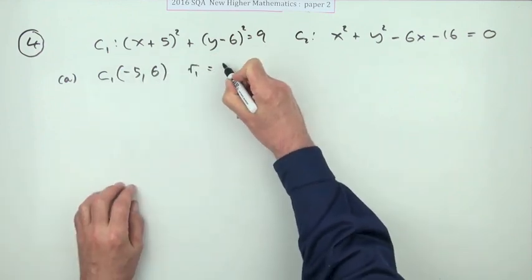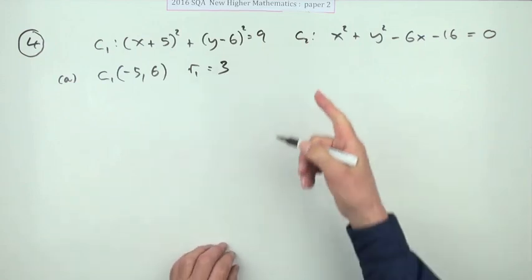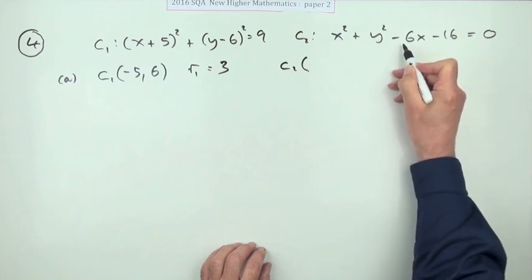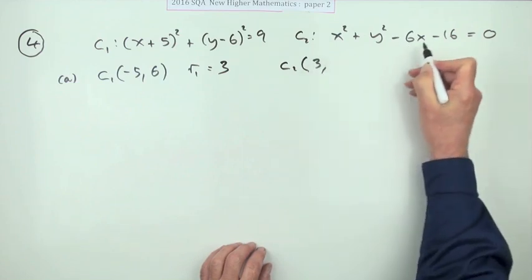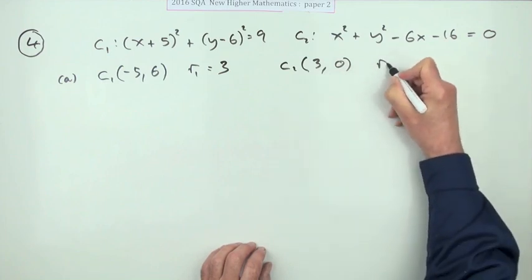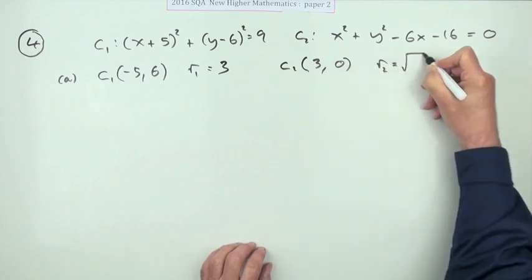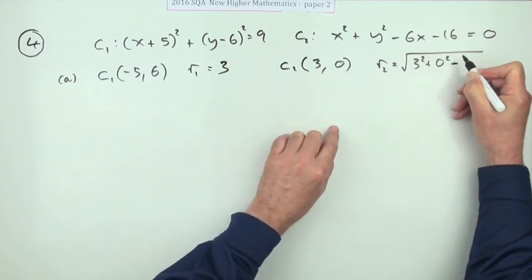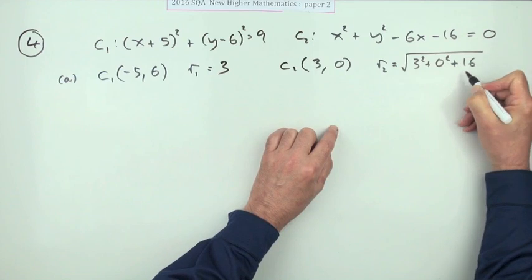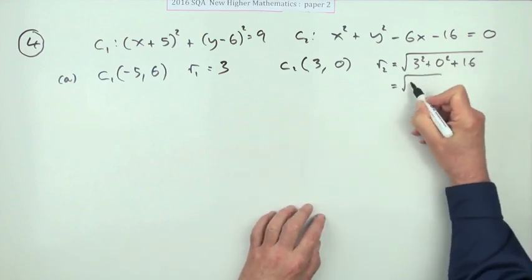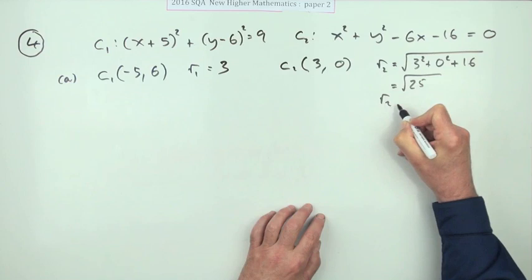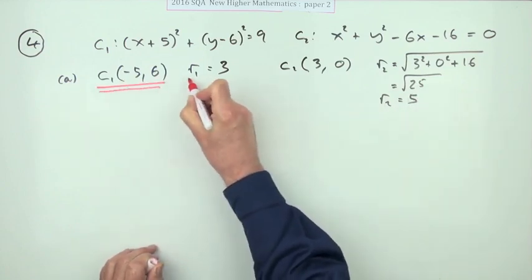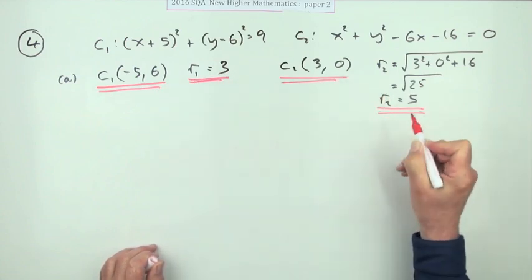And for circle two, if I borrow the name in the circle for its center, that will be half of the negative which is three. Notice there's no y so that will be a zero. Need to work out the radius. The radius is going to be the square root of the center squared: three squared plus zero squared minus the number at the end, so I'll be plus a 16. Well that's 16 and 9 is 25, that's very handy, so R2 is 5. Only said write down, so simply stating them must get you a mark each.